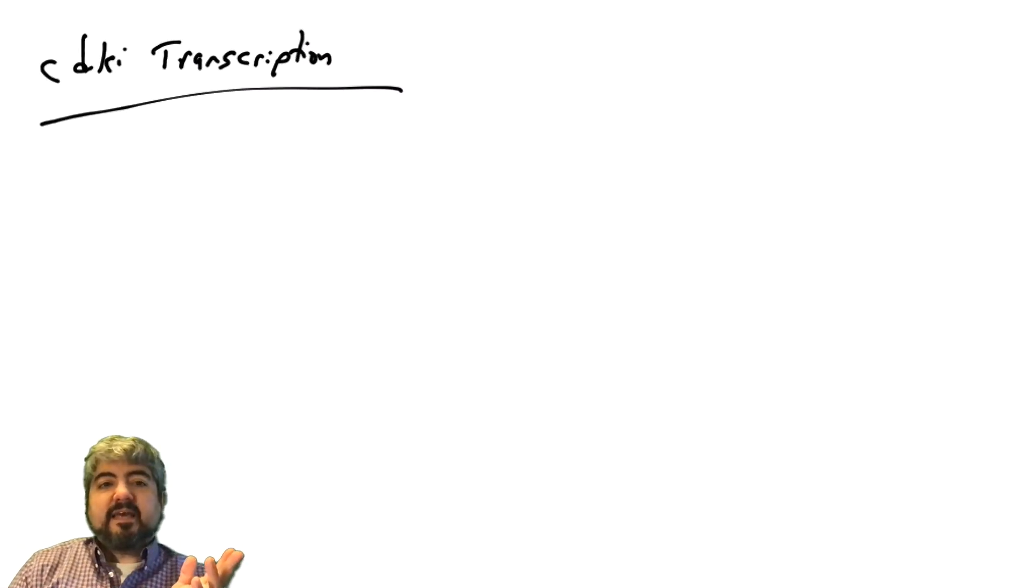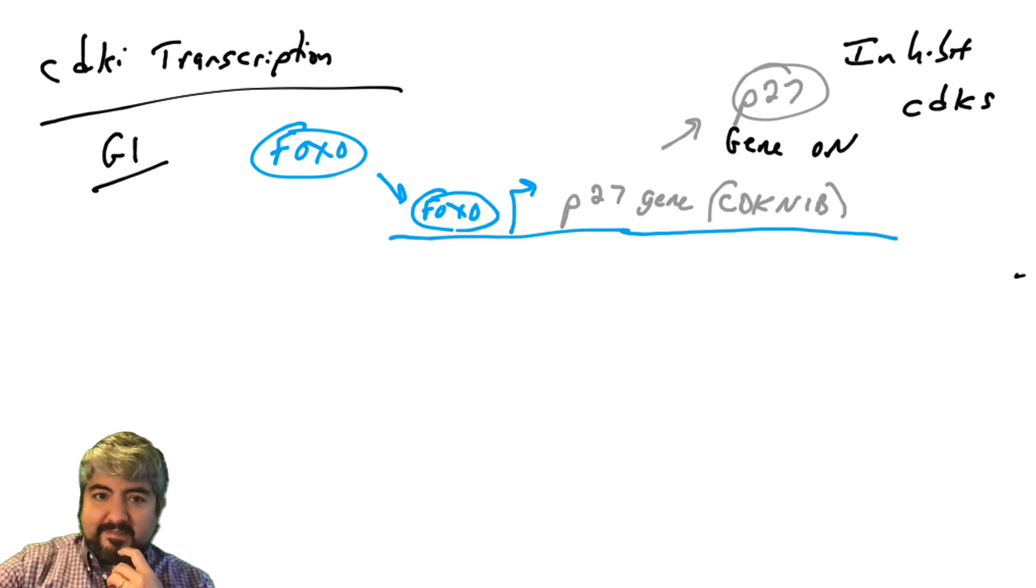The levels of CDKI transcription can be regulated. So the gene that codes for the P27 protein, its gene is called the CDKN1B. That is the name of the gene. That gene produces the P27 protein. And again, what is P27? It is a CDKI, inhibits all the CDKs. Transcription factors must bind the promoter of this gene to allow this gene to be transactivated, to turn on. And there's a transcription factor family called FOXO, also known as FKHR. And when this transcription factor is active, it can bind the promoter of P27 gene called, again, CDKN1B, and allow the production of the protein.